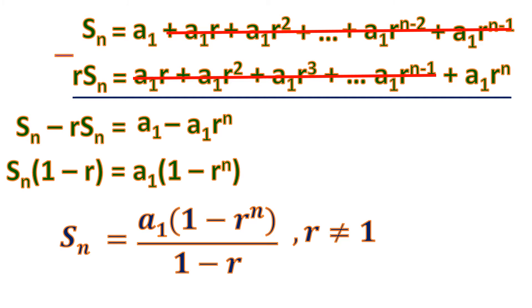We don't need to state r ≠ 0 separately, because if r equals 0, the sequence is not geometric — the second and all subsequent terms would be 0. Also, a sub 1 can be written as a sub 1 times r to the power of 0, and if r is 0, that gives 0 to the power of 0, which is undefined. So r cannot be 0 in a geometric sequence.